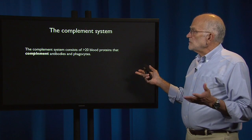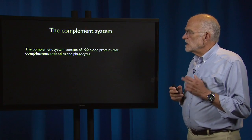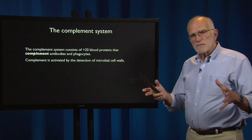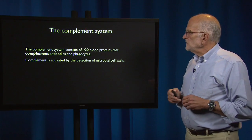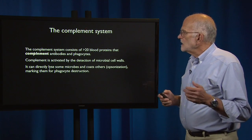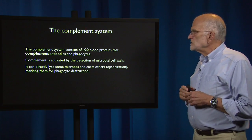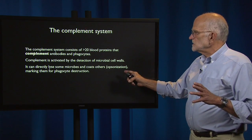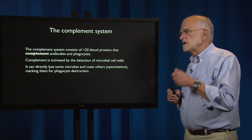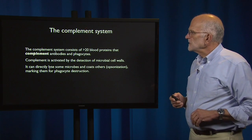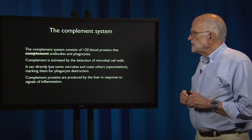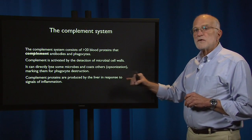The complement system is about 20 blood proteins that complement the functions of antibodies and phagocytes. It is activated by the detection of a component of a microbial cell wall. It can directly lyse some microbes, and others it coats — this is called opsonization — marking them for phagocyte destruction. It's kind of like a forester going through the forest and putting a yellow flag on a tree that should be cut down. Complement proteins are produced by the liver in response to signals of inflammation, so the liver is a very important immune organ.